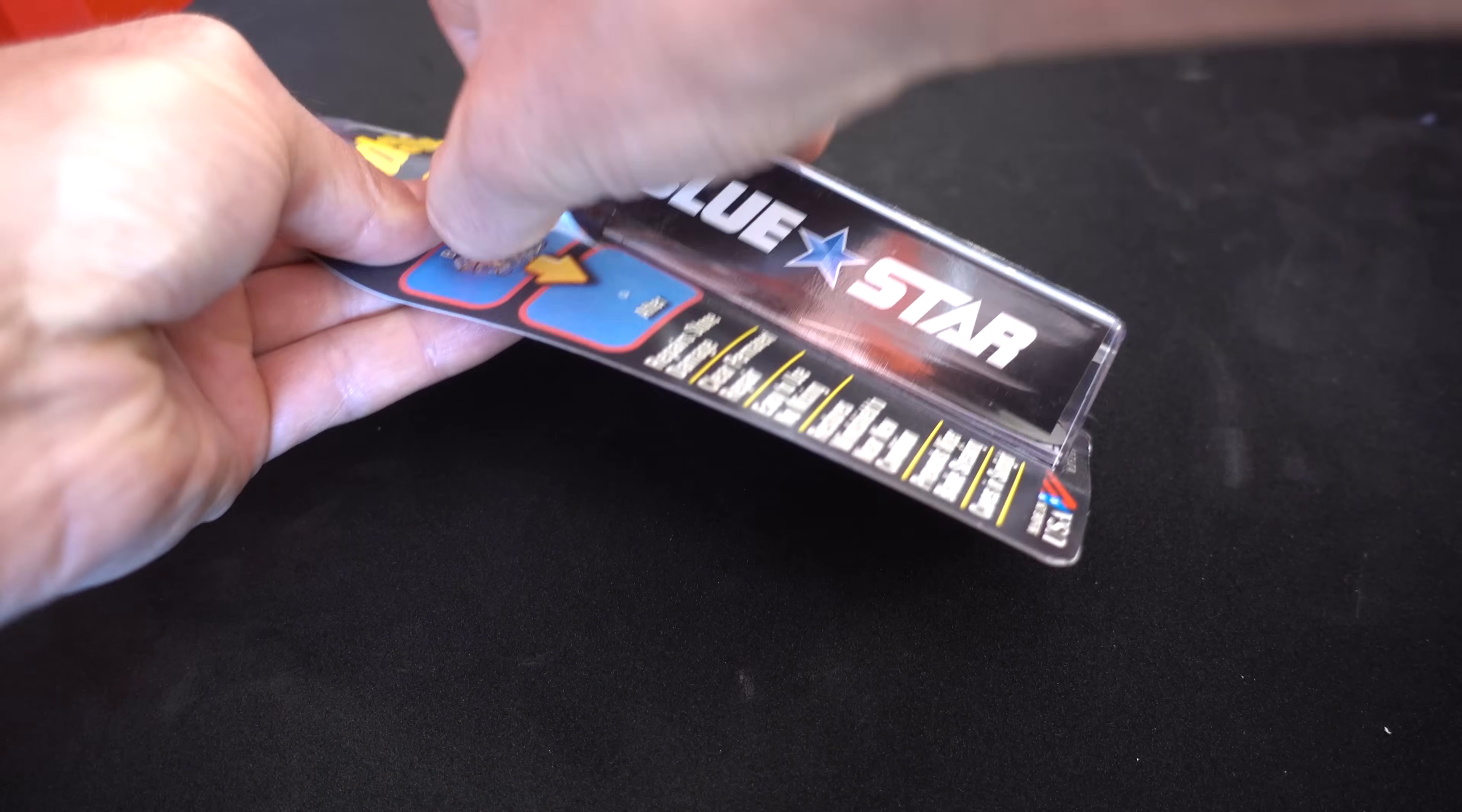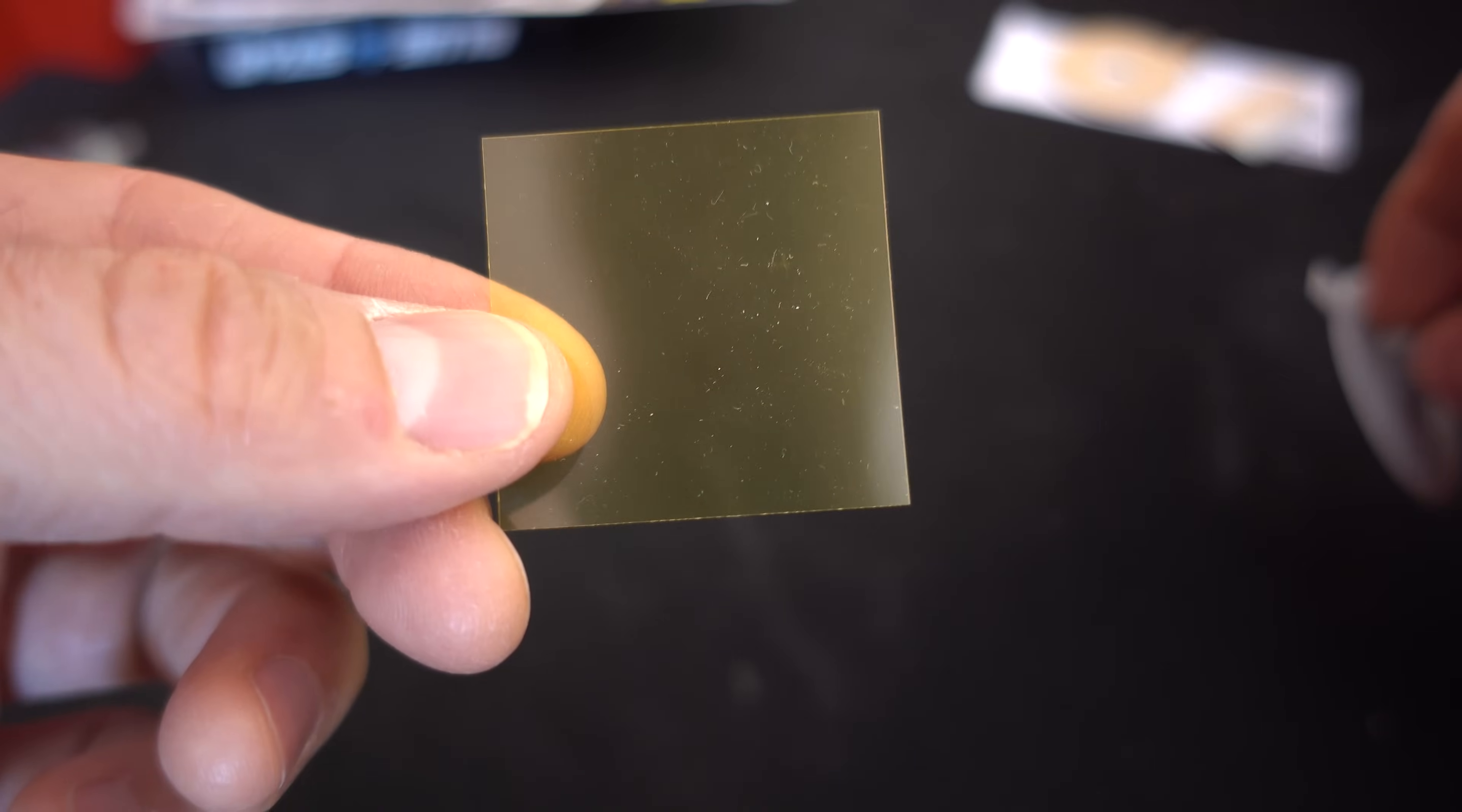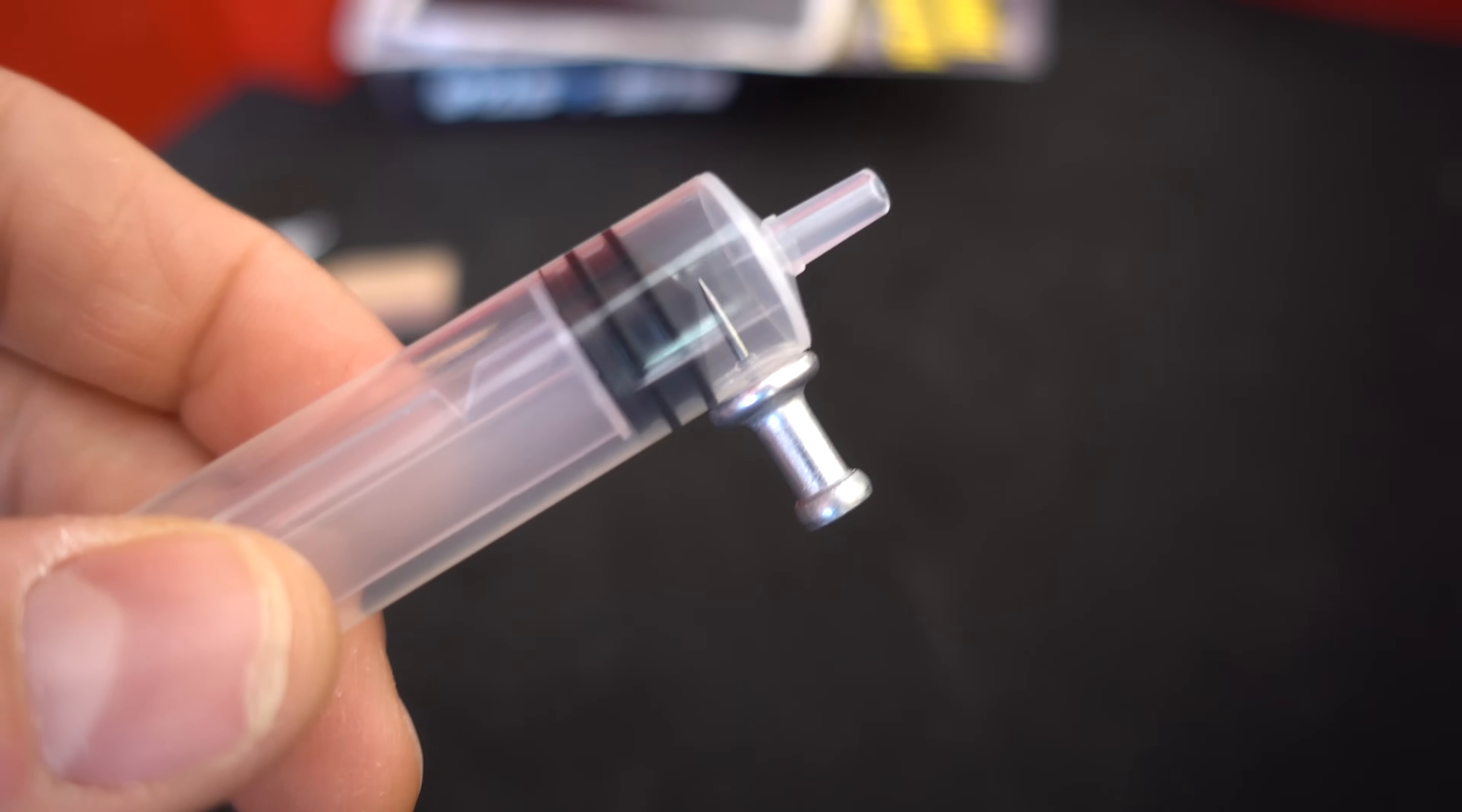Let's take a look in the box. We've got a set of instructions, the resin, the plunger, UV curing sheet, the bowl, the adhesive, and a razor blade. All right, let's get started.